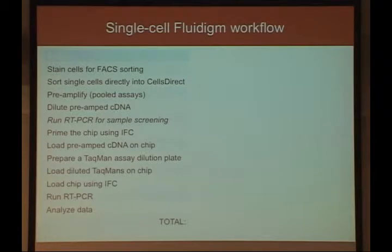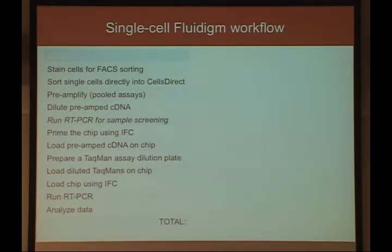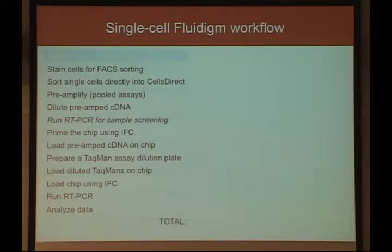For the detailed workflow: in a single cell experiment, you deposit single cells into a 96-well plate, generally by FACS sorting after staining. The cells are sorted into a 96-well plate — a conventional one, not the array.